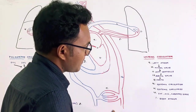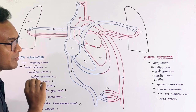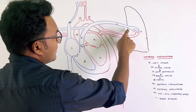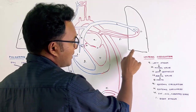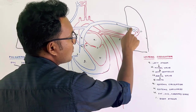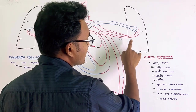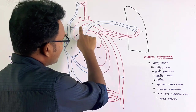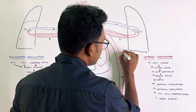Now we discuss bronchial circulation, which is different from pulmonary circulation. The lungs themselves are an organ and need their own blood supply. The lungs receive oxygenated blood through bronchial circulation to nourish the lung tissue itself, not for gas exchange. The lungs cannot rely solely on deoxygenated blood passing through the pulmonary capillaries for their own oxygen needs.